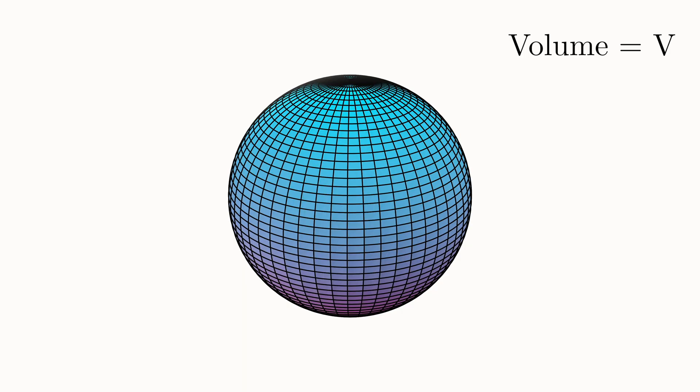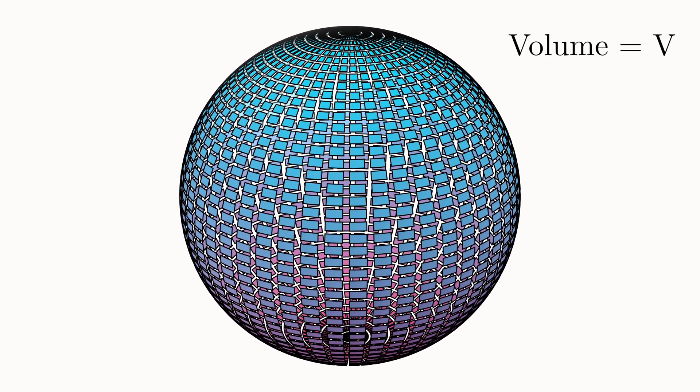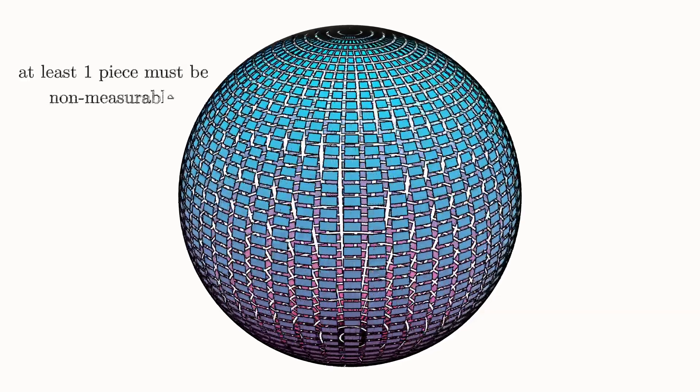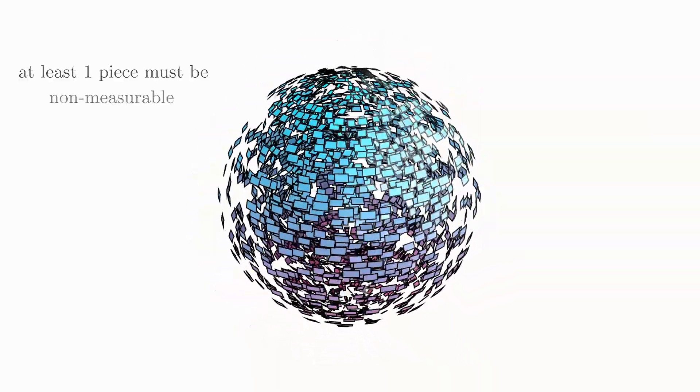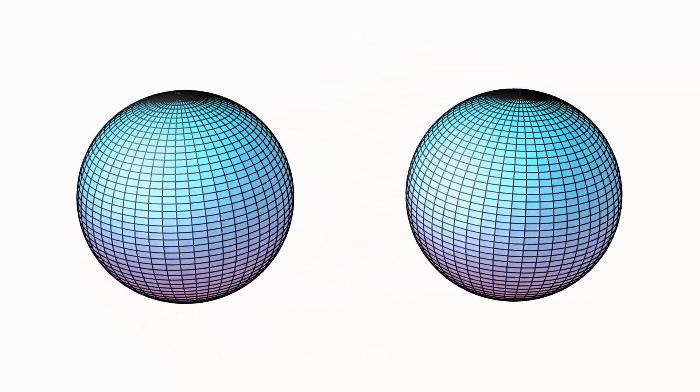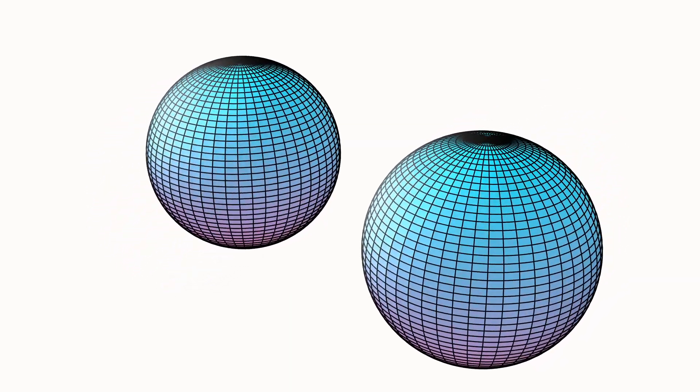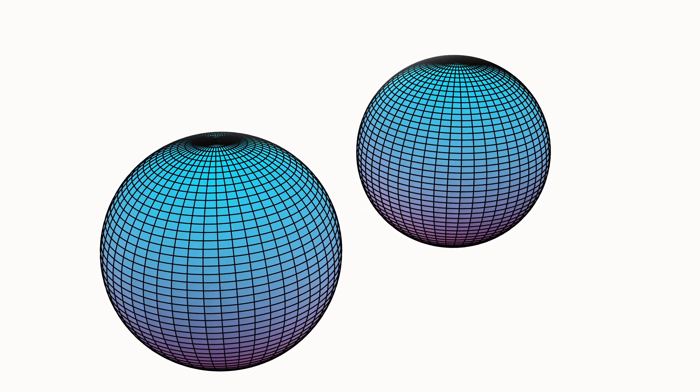So although the sphere begins with a specific volume V and ends as two spheres with the same volume, along the way we have introduced sets that have no volume whatsoever. These sets are so intricately constructed that any attempt to assign a measure to them would result in a logical contradiction. Therefore, whatever operations have been performed along the way, the volume has not been properly conserved.